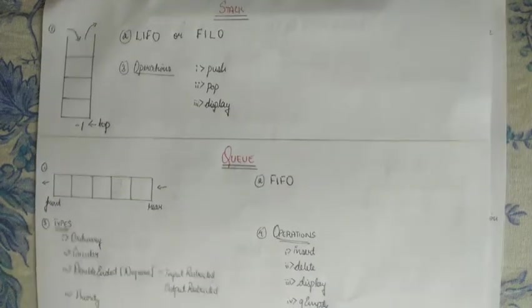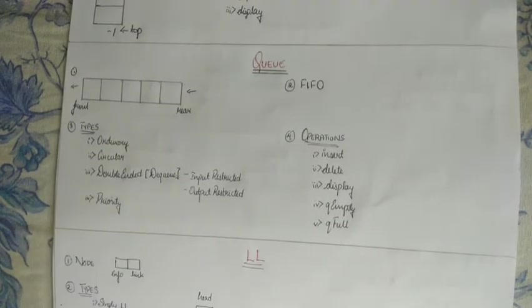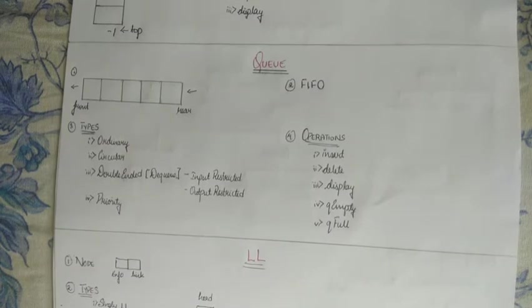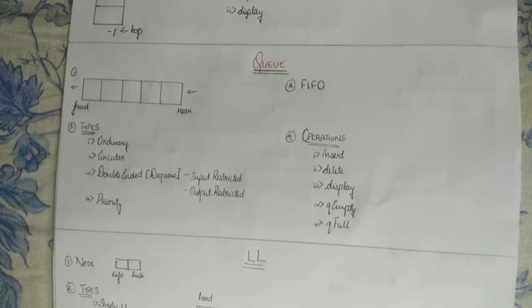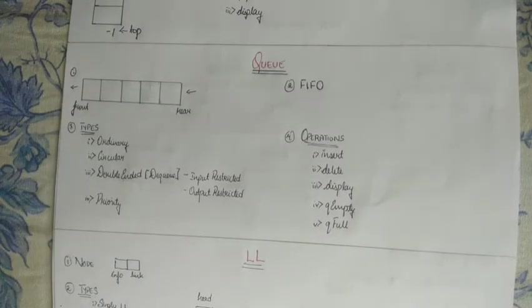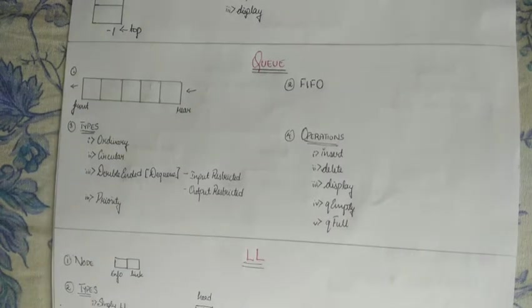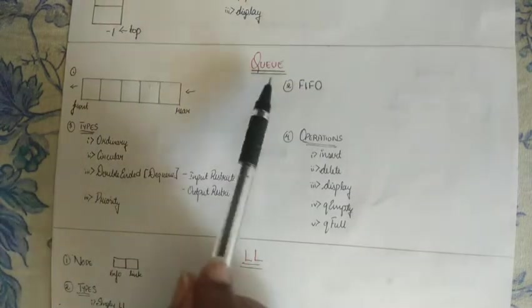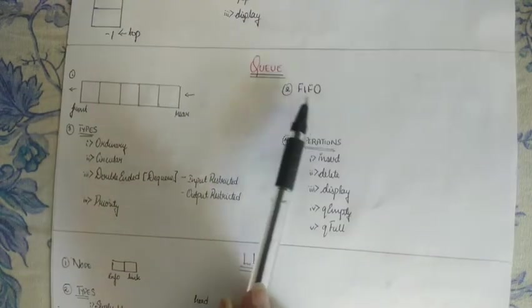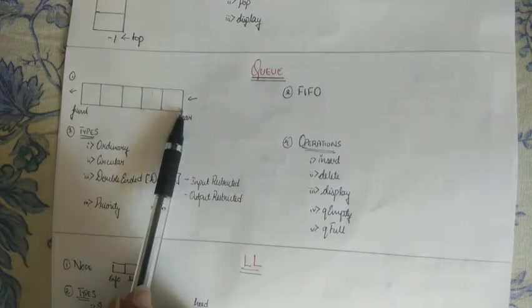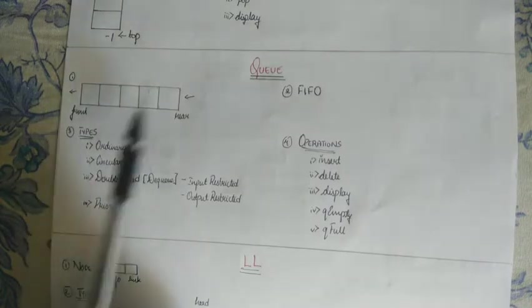Next, let's move on to queue. Queue is another data structure. So queue is an ordered collection of items from which items may be deleted at one end called the front. And then items may be inserted at the other end called the rear. So in queue, insertions are possible at the rear and deletions are possible at the front. Now the principle that queue follows is FIFO, that is first in first out, similar to the queue that we would be standing in any counter or in a restaurant or anywhere.